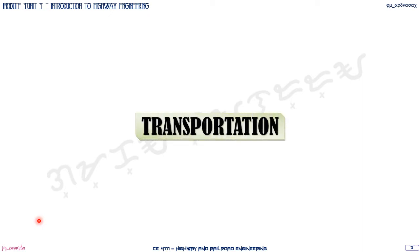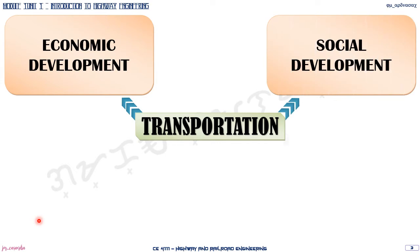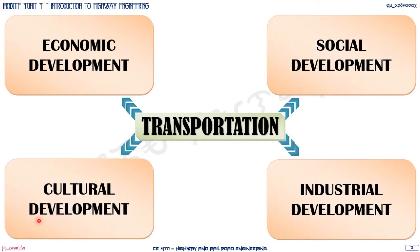When we talk about transportation, it would always be related to progress and development. Transportation could be related to economic development, social development, industrial development, and cultural development. As we discuss the importance of transportation and its effect on these different developments, we would also see that they are all interrelated.